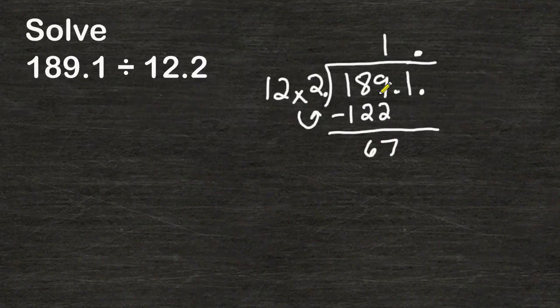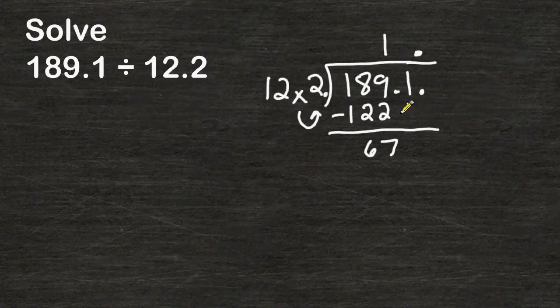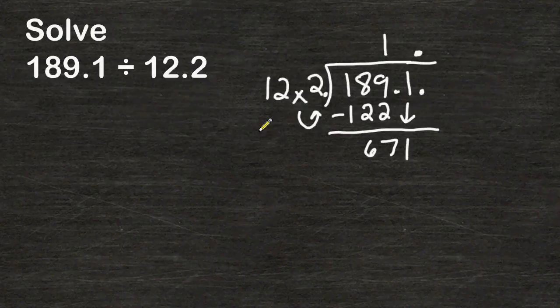The next place value has a 1 in it so we are going to drop that number 1 straight down. And then we are going to proceed to divide 122 into 671.